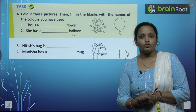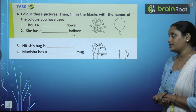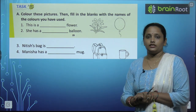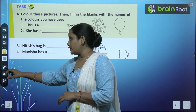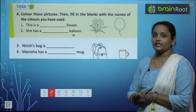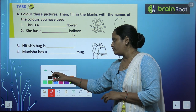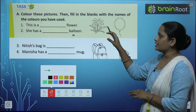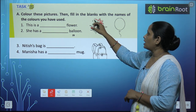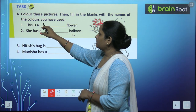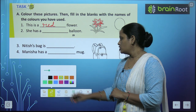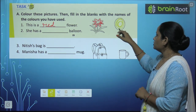Now what we have to do in this exercise: we have to color these pictures and then fill in the blanks with the name of the colors you have used. You have to add color in the picture and then write which color you filled in the blank. So let's see — this is a blank flower. Let's make it red. So this is a red flower, so we will write here: red.